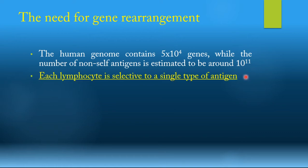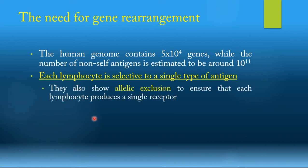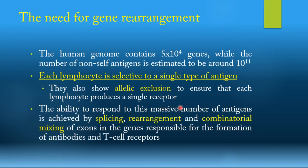Not only that, but each single one of the lymphocytes is only selective to a single type of antigen and cannot interact with two or more antigens — it can only interact with a single antigen. To drive that point further, each lymphocyte will undergo allelic exclusion, where it will take the genome of the maternal or the paternal side and exclude the other one, just to make sure it doesn't form receptors from both genomes. It will only form a receptor taken either from the paternal genome or from the maternal genome.